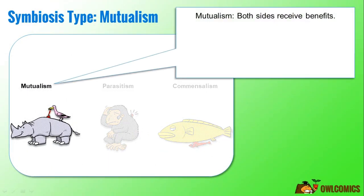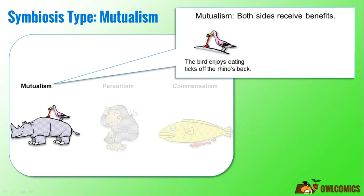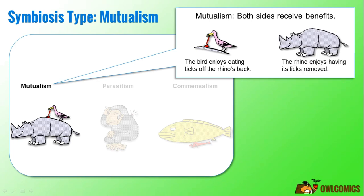Let's look at mutualism first. When a symbiosis is mutualism, both sides receive benefits. In this example, we have a bird enjoying eating ticks off the rhino's back, and the rhino is also enjoying having its ticks removed by the bird. Both sides are receiving benefits, and we call this mutualism — really the happiest type of symbiosis.